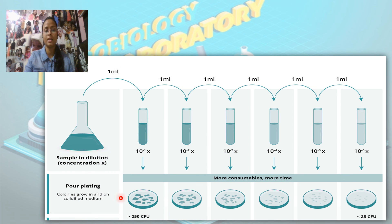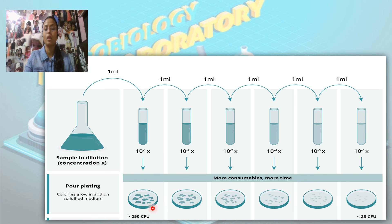Both techniques work together: the sample is diluted to the needed concentration, and then pour plating allows colonies to grow in unsolidified medium. As we can see, as we decrease the concentration of the sample, the number of colonies also decreases. We typically choose concentrations from 10 to the power minus 3 to 10 to the power minus 6 to examine the colonies, and we can count them manually or by a colony counter machine.